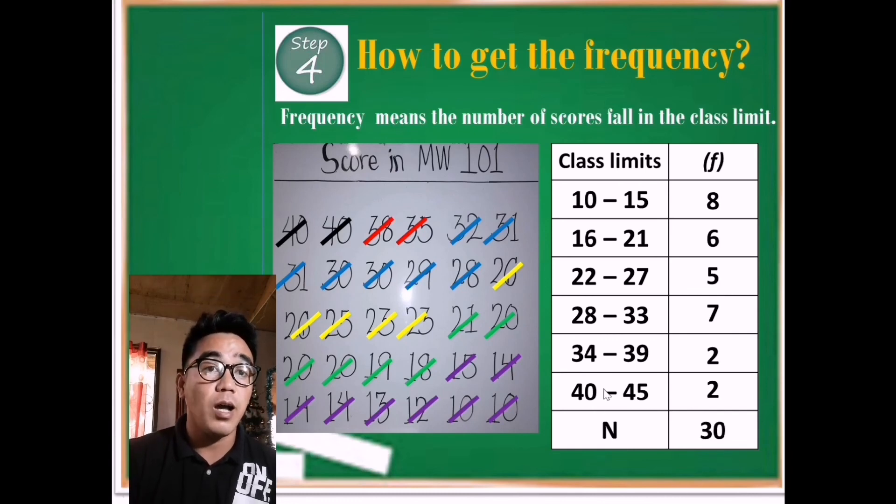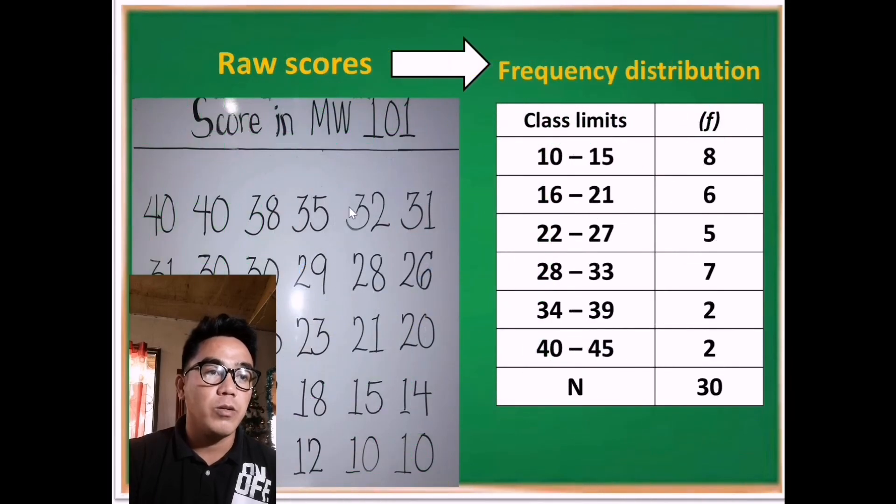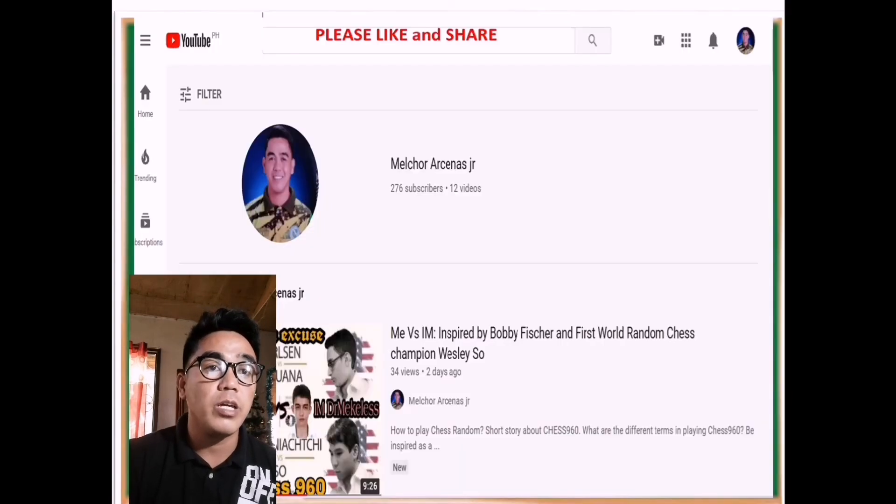Okay, so let us have the raw scores to the frequency distribution. The raw score can be arranged in descending or ascending order. Then the frequency distribution can also be arranged in ascending or descending class limits or class interval. I hope you learned something from this video. Thank you and God bless everyone.